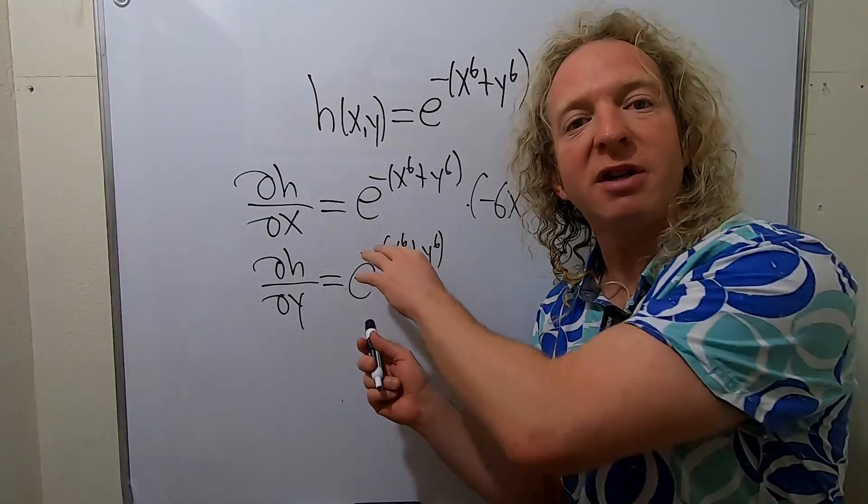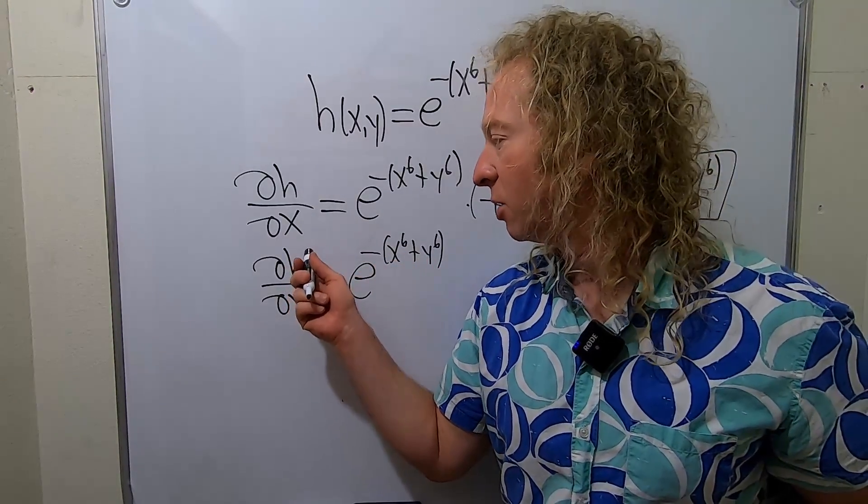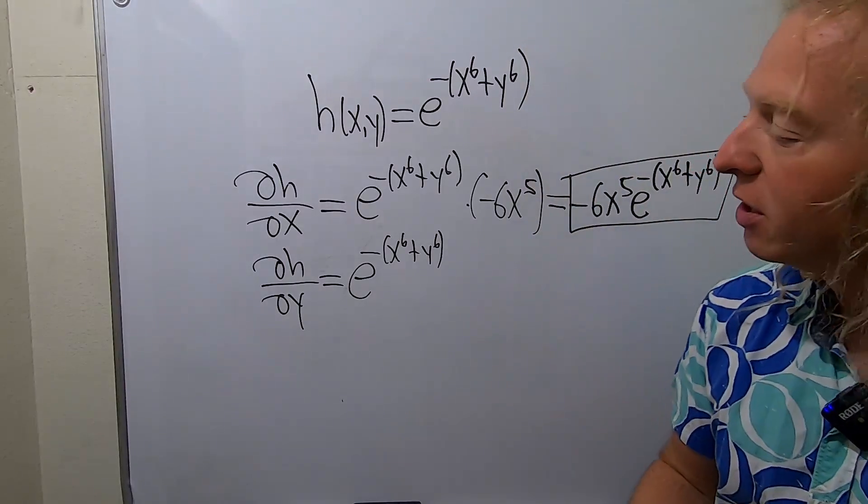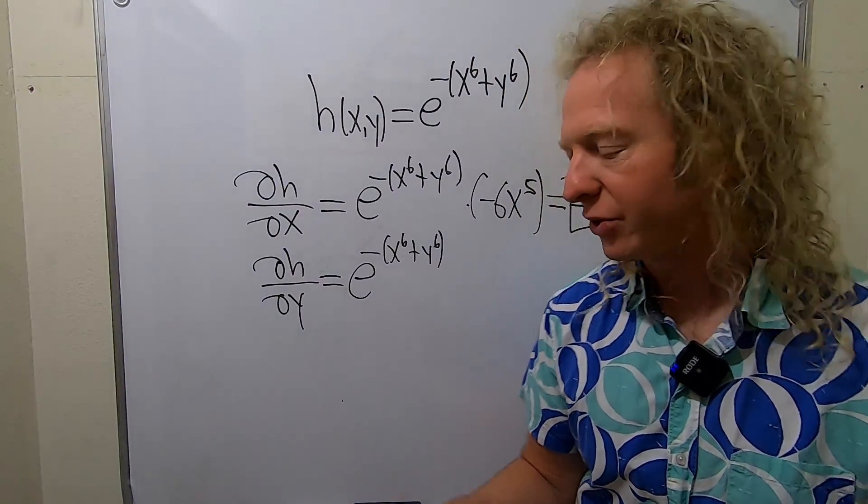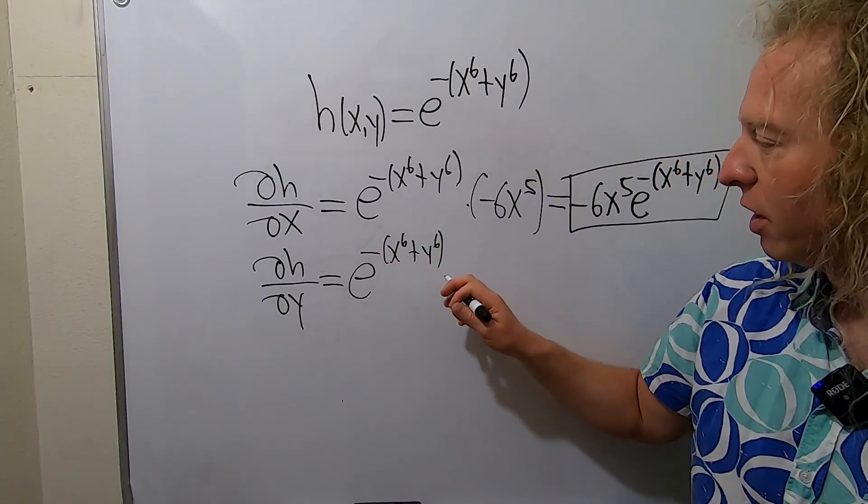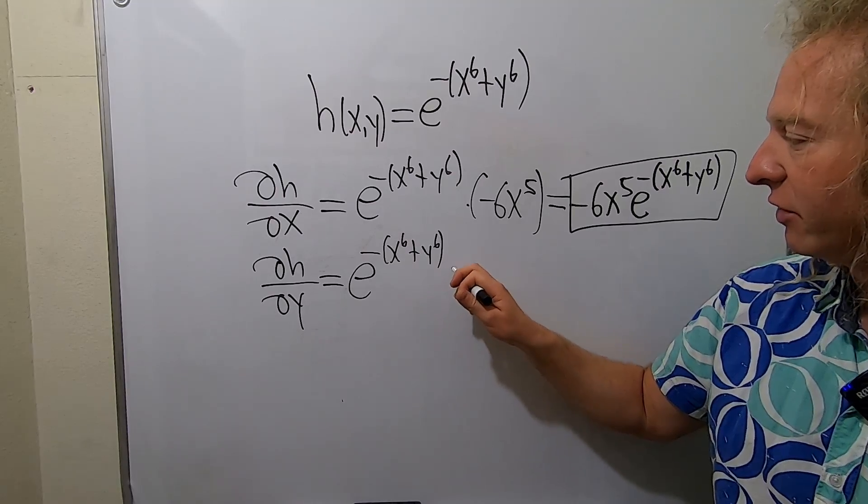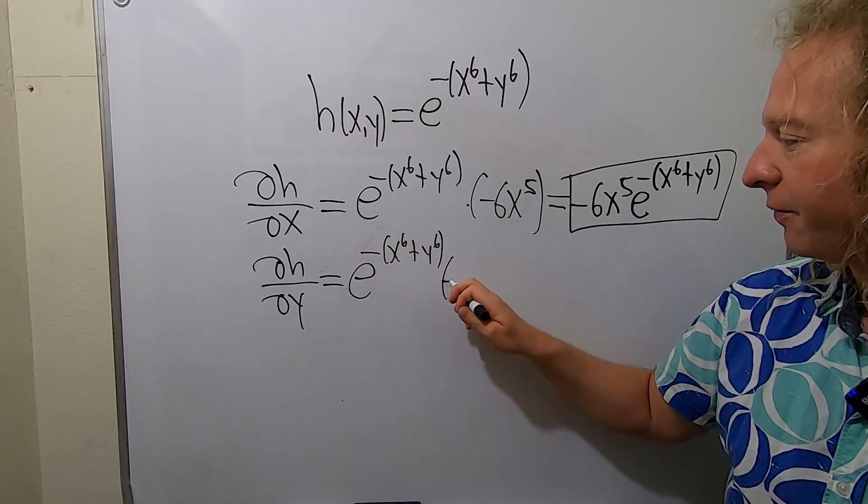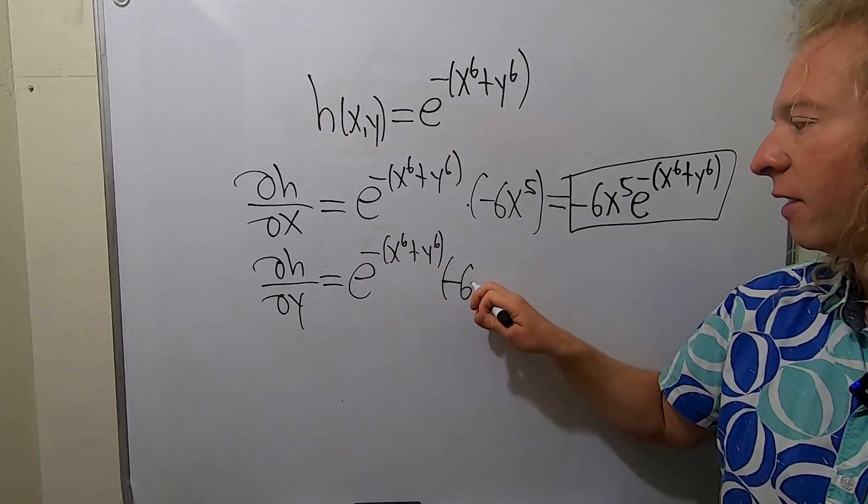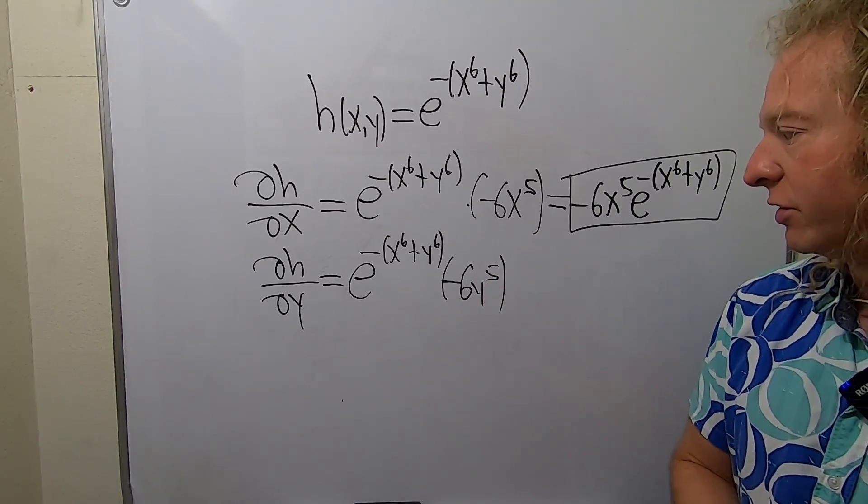Except this time, the X is going to become 0 because we're taking the partial with respect to Y. So all of the X's are constants. This derivative here will be 0. So the derivative of the inside is only going to give us -6y^5. Good stuff.